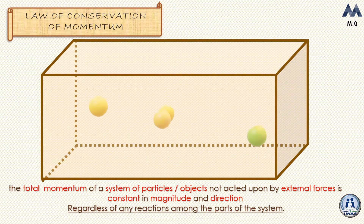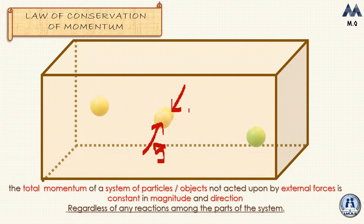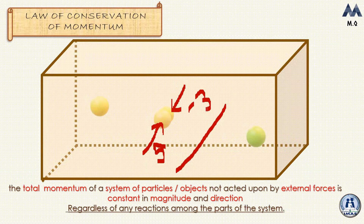Let's look at one of those collisions to explain the meaning of this statement. These two particles in the center: the first one had a momentum in one direction and the other had a momentum in the opposite direction. Let's say this momentum was 5 newton-seconds and the other was negative 3 — negative because it's in the opposite direction, and momentum is a vector quantity. So the total momentum before the collision is 5 plus negative 3, which equals 2.